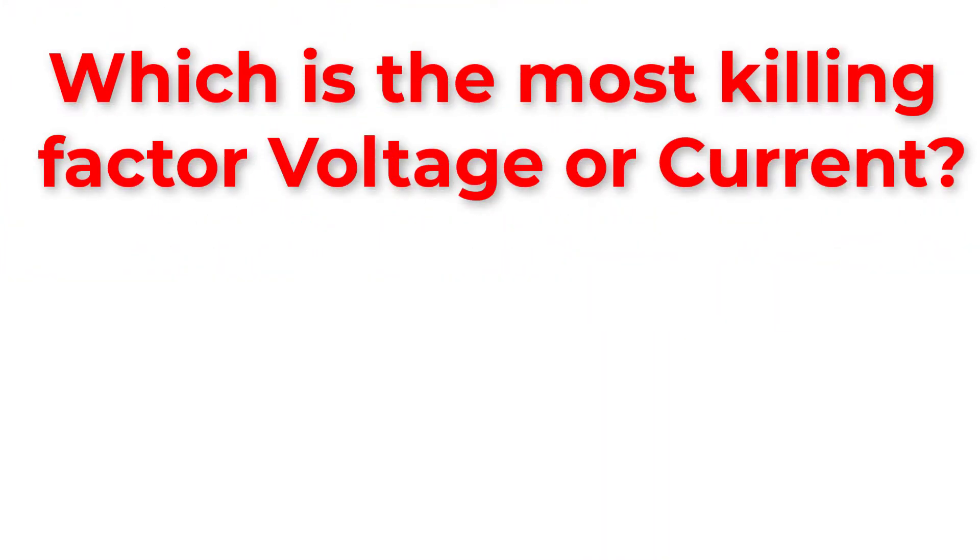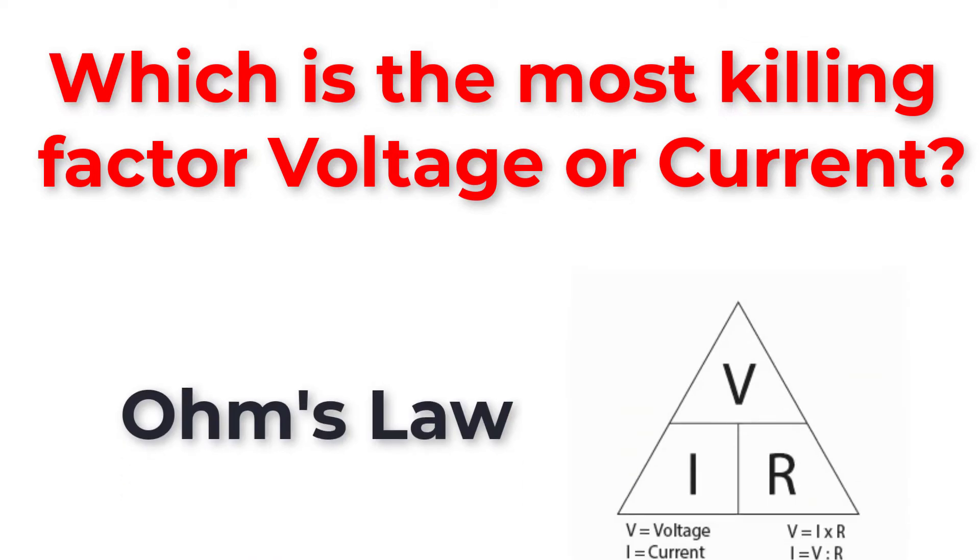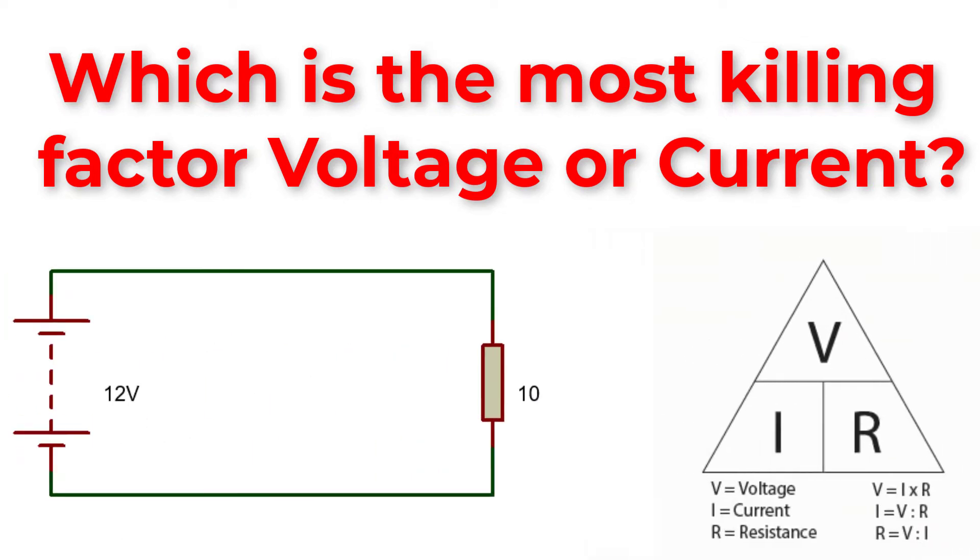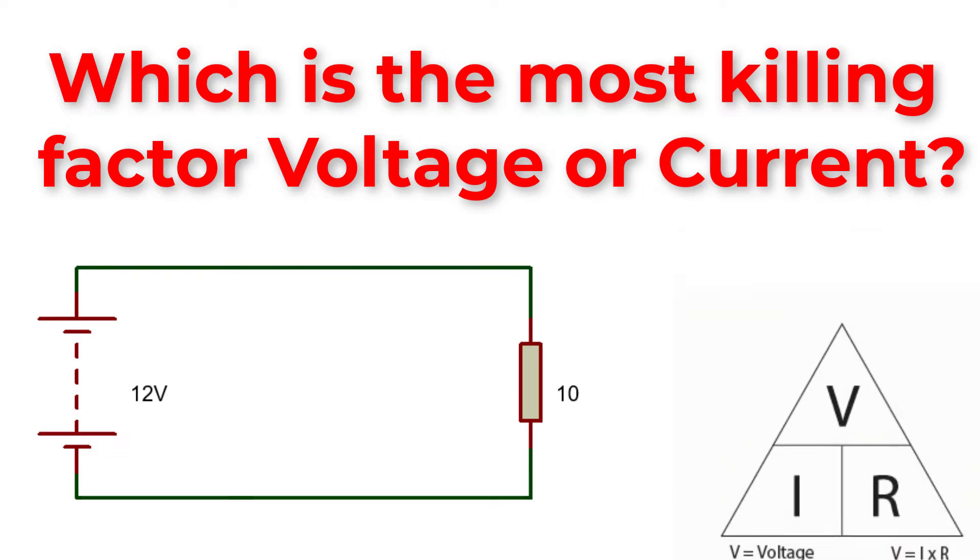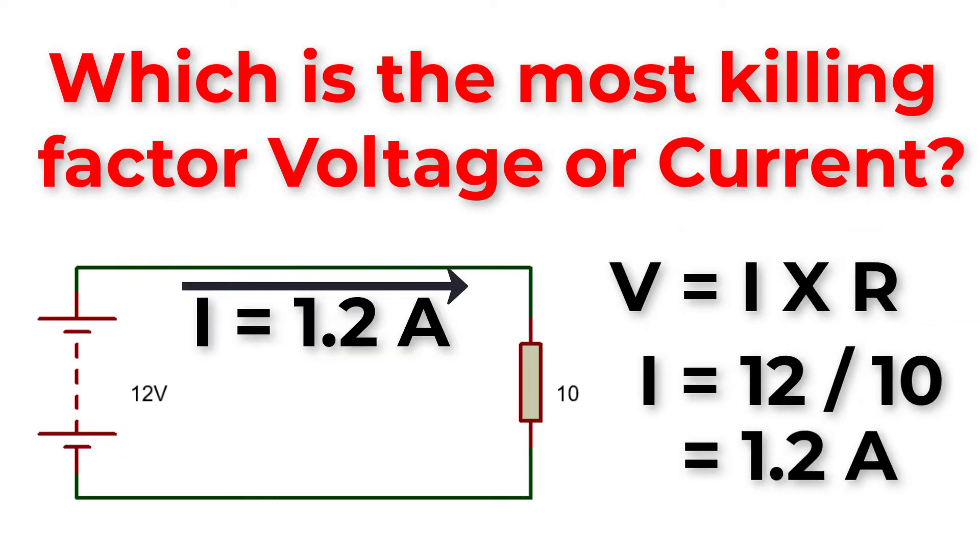Actually, to answer this question, we have to return back to electricity's most basic rule, which is Ohm's law. In this circuit, we have a 12V source and 10 Ohm resistance. So, according to Ohm's law, only 1.2A will flow through the circuit.